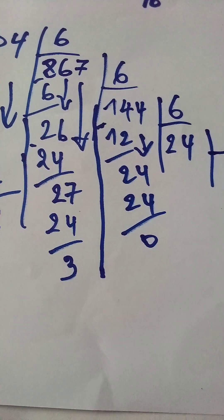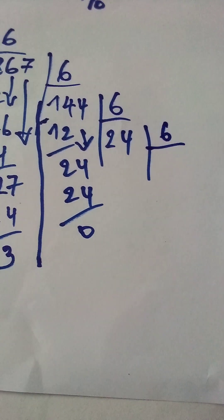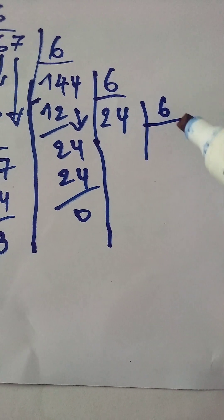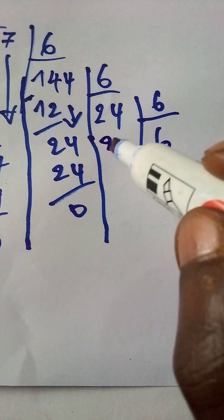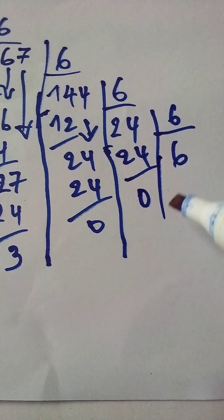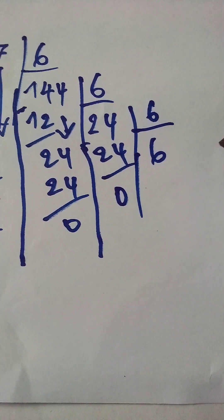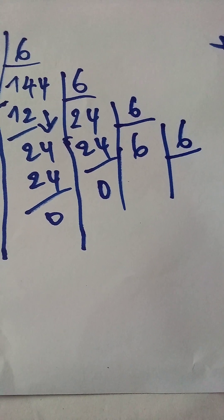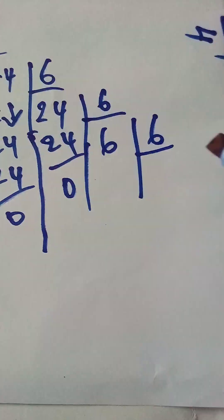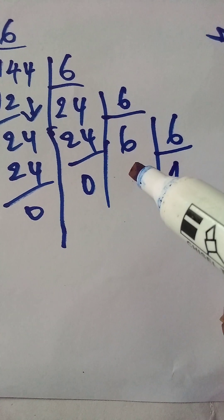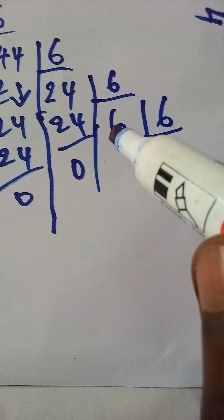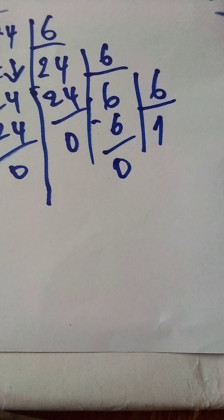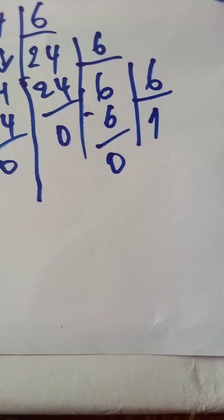We divide 24 again by 6. By dividing 24 by 6, we put 4. 4 times 6 is 24, and the remainder is 0. Then also we divide 6 by 6. 6 divided by 6 — we put 1. 1 times 6 is 6, remainder is 0. We continue the successive division until the quotient reaches zero.